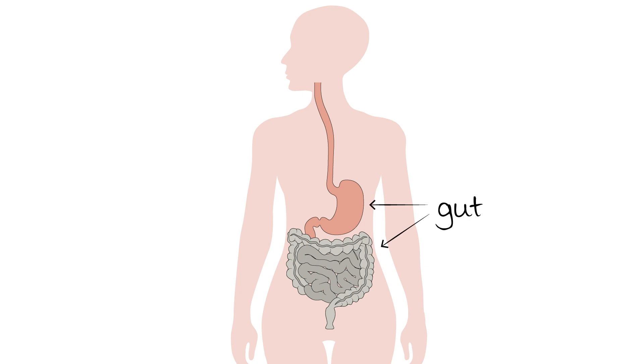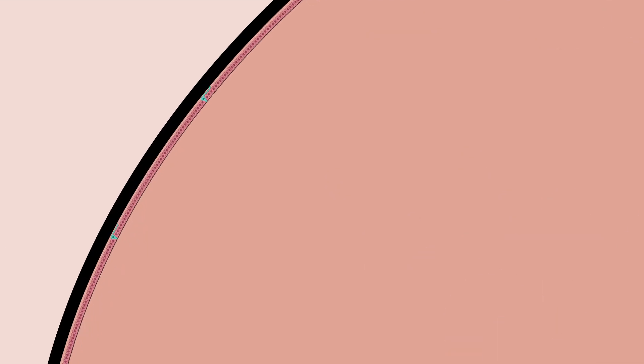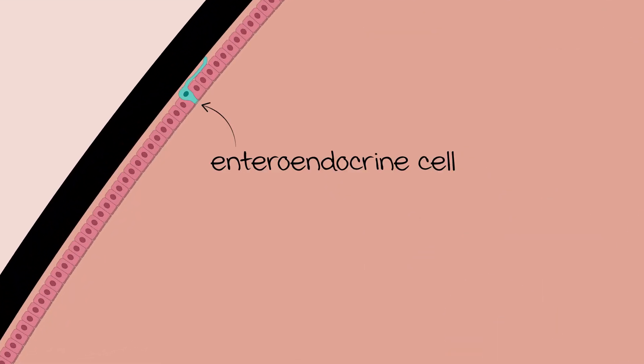Your gut is made up of different cell types that have specific jobs to do. About one in every 1,000 cells are enteroendocrine cells.